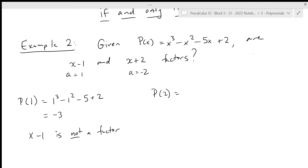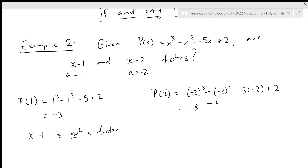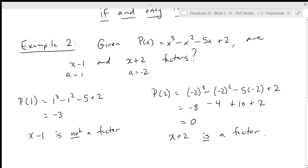Let's try p of negative 2. We get negative 2 cubed minus negative 2 squared minus 5 times negative 2 plus 2, which gives us negative 8 minus 4 — because we're squaring first, getting rid of that minus but then we have another minus — plus 10 plus 2. So we have minus 12 plus 12, which gives us 0. So x plus 2 is a factor.